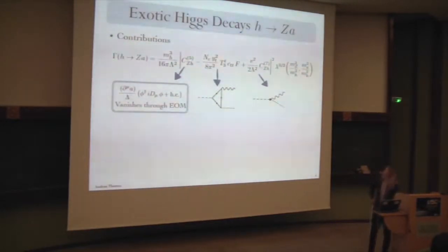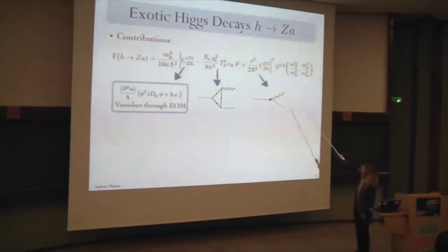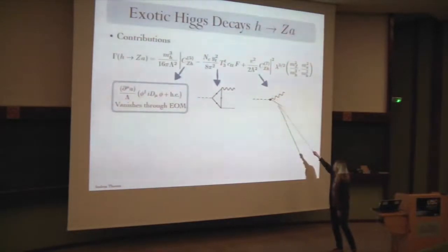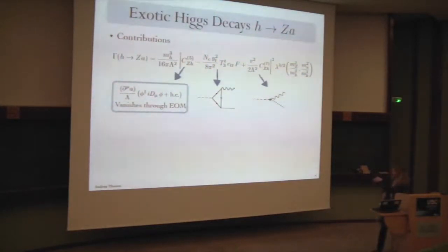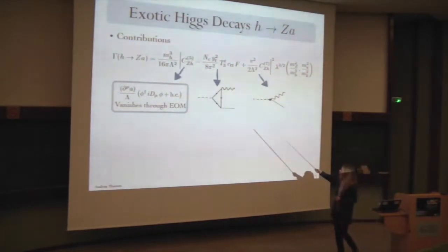For the exotic Higgs decay H→Za, we can compute contributions to the Higgs width. It depends on the Higgs mass, lambda, and the couplings. We get the dimension seven contribution from that operator. We also get a contribution from a top loop, because the Higgs and the ALP couple most strongly by mass, so the top gives the largest loop contribution.